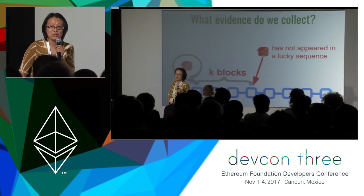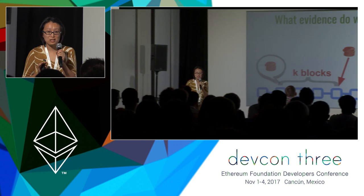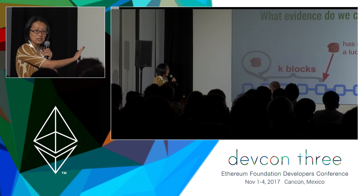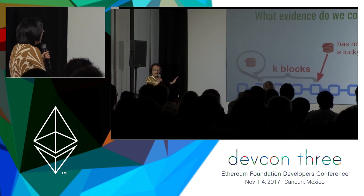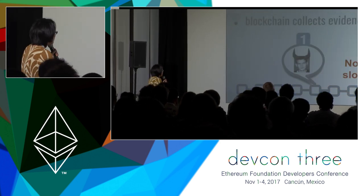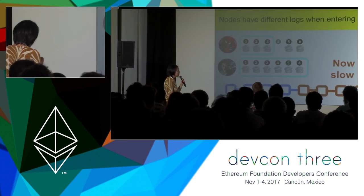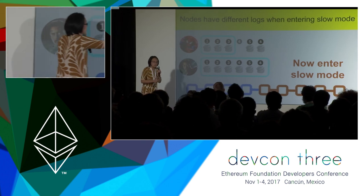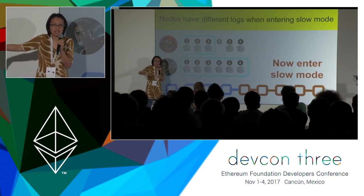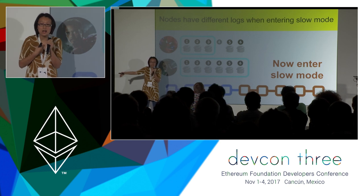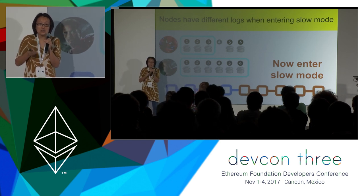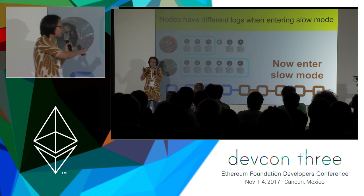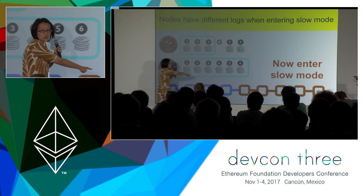How do we fall back to the slow mode? It's actually slightly tricky to do it correctly. When we all want to fall back, our fast path logs may have different lengths because of network delay — your log can be a little longer than mine. So at this moment we have to decide on a cutoff, which will be the cutoff of the fast path log before switching to the blockchain.